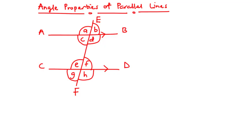In today's video we are going to look at angle properties of parallel lines and solve a couple of examples. Parallel lines are straight lines which are always the same distance apart and can never meet. Considering this diagram, we have two parallel lines AB and CD, with arrows indicating they are parallel. When this pair of parallel lines is cut by another straight line called an intersecting transversal, which is line EF, it creates pairs of angles with special properties.